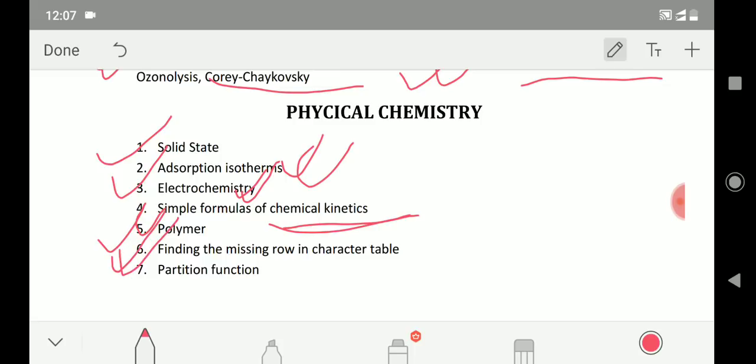Then this is again a very common topic: how to find a missing row in a character table. It is a relatively easier question from the character table or group theory. And then partition function - from partition function lots of questions will be there.